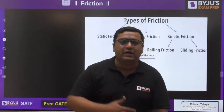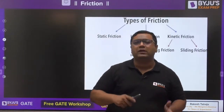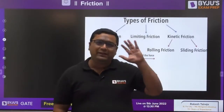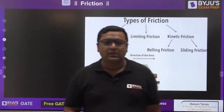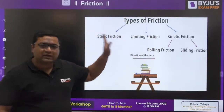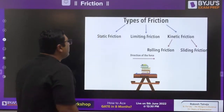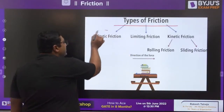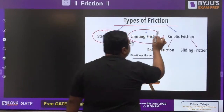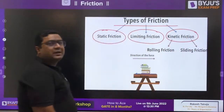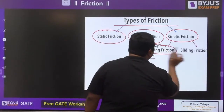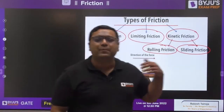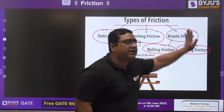This is the slide from where today's part starts. Maybe some of you did not attend yesterday's class because it was at 11 PM, so I revised first. Now starting fresh: when talking about types of friction, there are many types. Number one is static friction, number two is limiting friction, number three is kinetic friction. Kinetic friction is of two types: rolling friction and sliding friction.